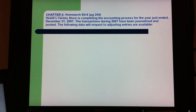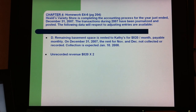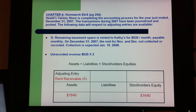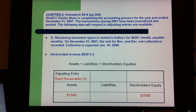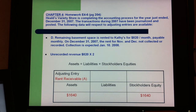Part D is about rent receivable. The remaining basement space is rented to Cati for $820 per month, payable monthly. At the end of 2007, the rent for November and December was not collected or recorded. Collection is expected on January 10th, 2008. So the unrecorded revenue is 2 months — $820 times 2 equals $1,640 — considered as an asset and also stockholders' equity.